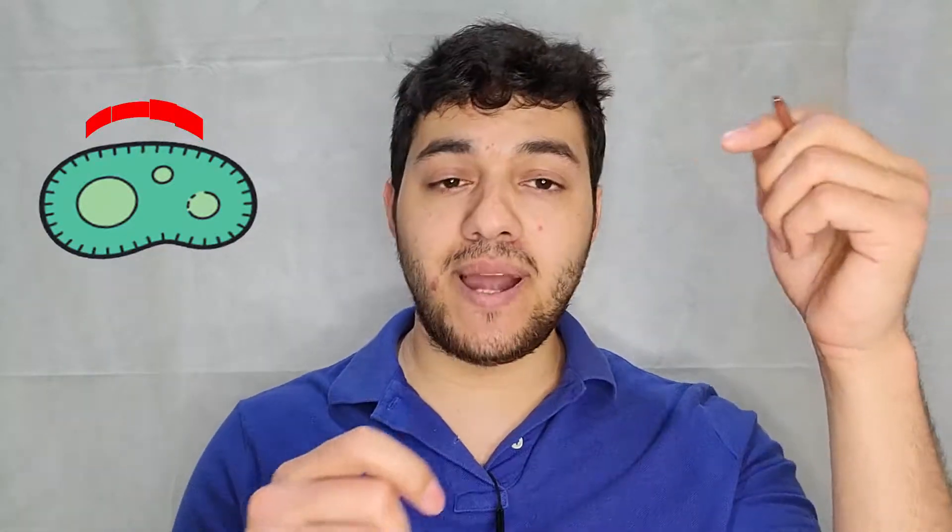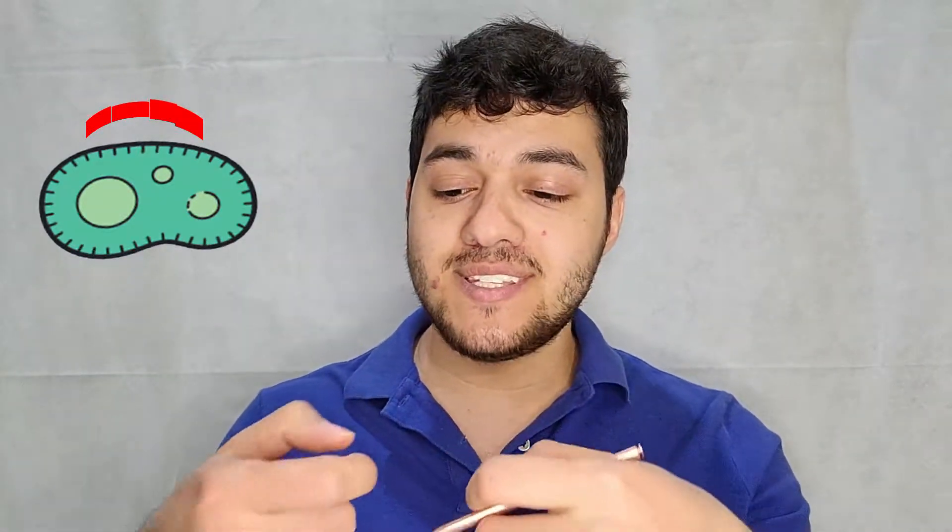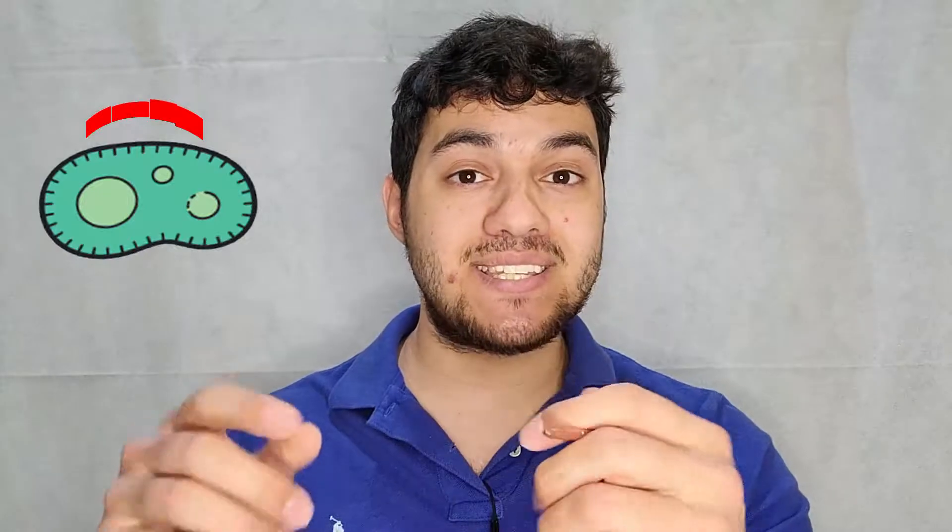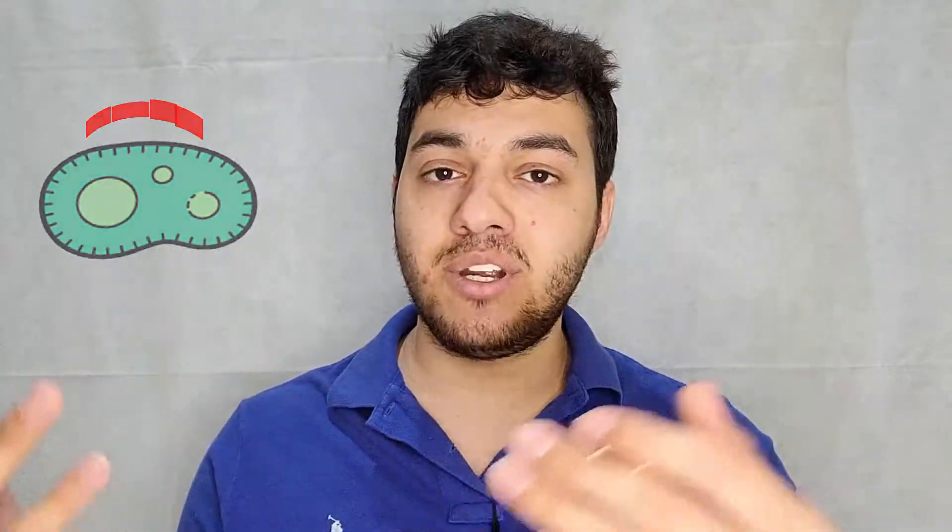Penicillin, the antibiotic, binds to the penicillin binding protein and prevents the cross-linking of the bacterial cell wall. So the cell wall is still synthesized but it's not linked together, meaning the bacteria will not have a functional cell wall.